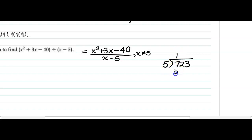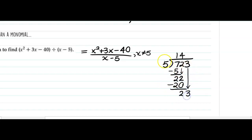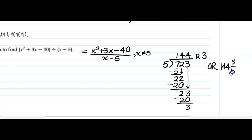Let's take it back to the old days with a problem like 723 divided by 5. You would say: how many times does 5 go into 7? Once. 1 times 5 is 5, then you subtract, giving 2. Bring down the next digit. 5 goes into 22 four times. 4 times 5 makes 20, subtract leaving 2. Bring down the 3. 5 goes into 23 four times. 4 times 5 makes 20, subtract, remainder is 3 — or 144 and 3/5, where we take the remainder over the divisor.